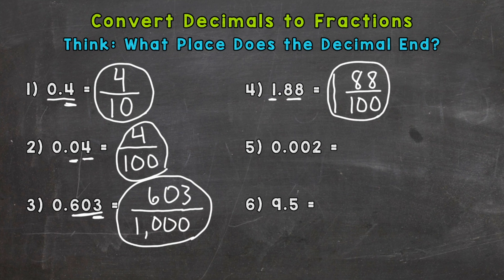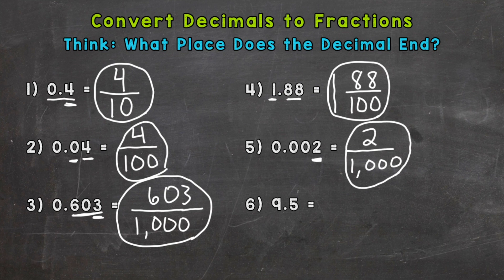Number five: we end in the thousandths — that's where the two sits. So our denominator is 1000 and the number to the right of the decimal is just a two, so we have two thousandths.